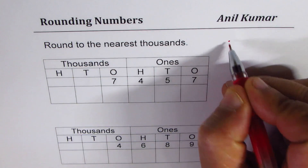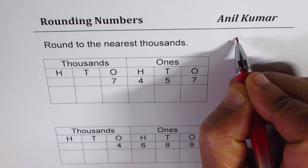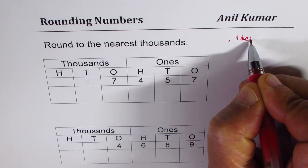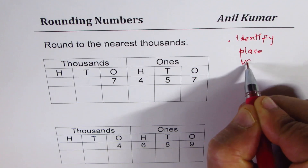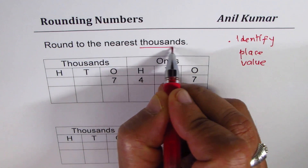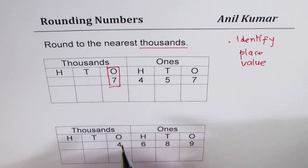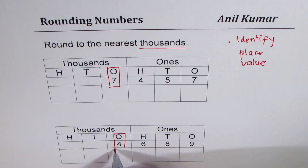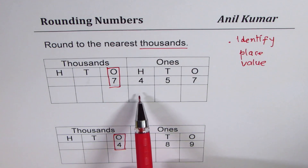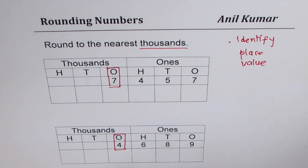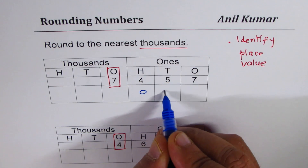The steps involved are: first, identify the place value of thousands. When we say nearest thousands, that is the place value we are looking for. Once you do that, rounding to the nearest thousand means the numbers to the right will always become zero — just put zero for them.